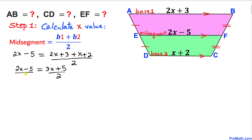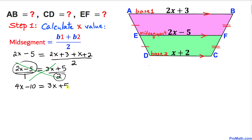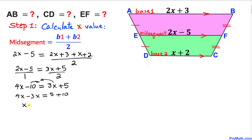Let's cross multiply to solve for x. Two times (2x − 5) gives us 4x − 10, equal to 3x + 5. Moving 3x to the left and −10 to the right: 4x − 3x = 5 + 10, giving us x = 15.